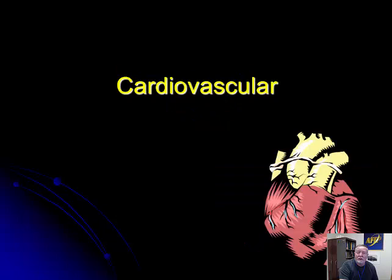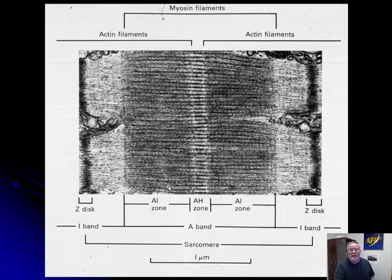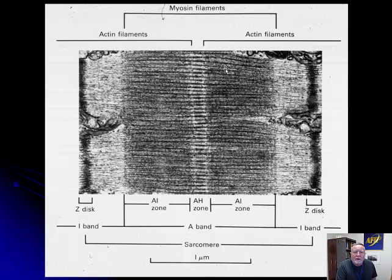Today we're going to start with the cardiovascular system. When many of you took histology, it was sort of a blur when we talked about muscle — actin filaments, myosin filaments, the Z-disc, the I-band, and the A-band. We're going to forget about most of that when we deal with muscle tissue in ultra structure.